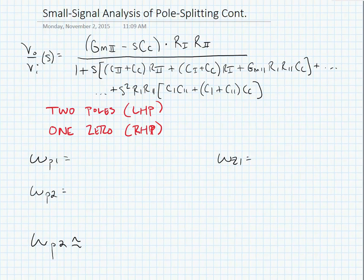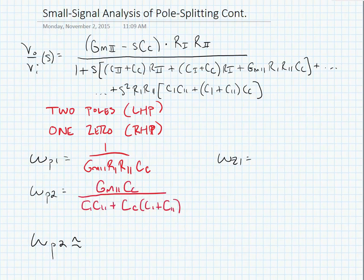The poles, if you do analysis to factor the denominator, we can find are given by 1 over GM2 R1 R2 times CC. This is our dominant pole, omega p1. Our second pole is equal to GM2 CC divided by C1 C2 plus CC times C1 plus C2.